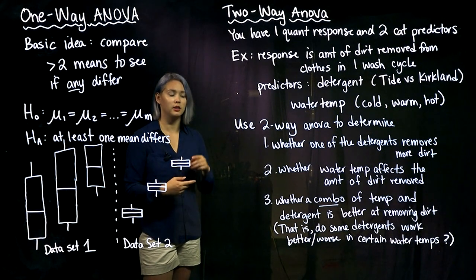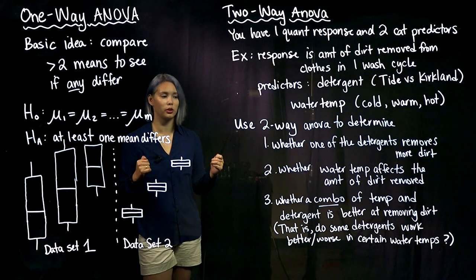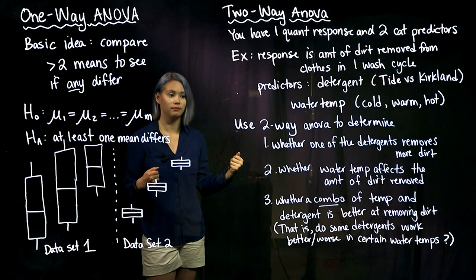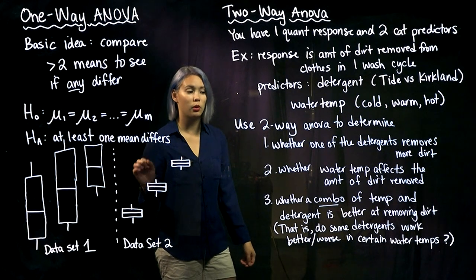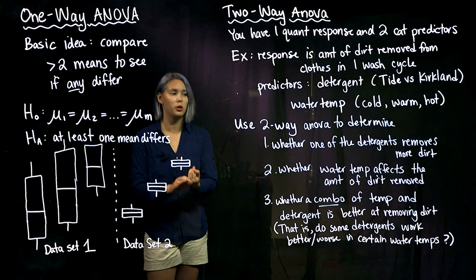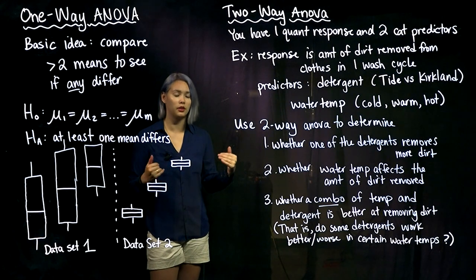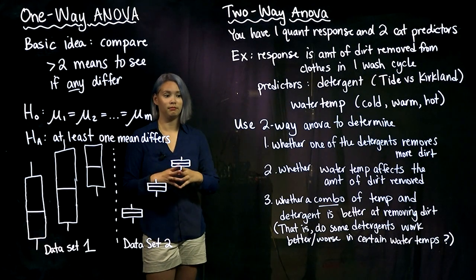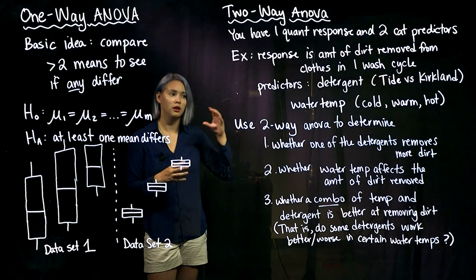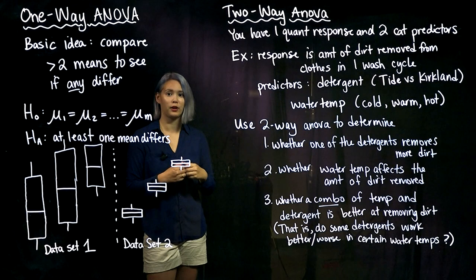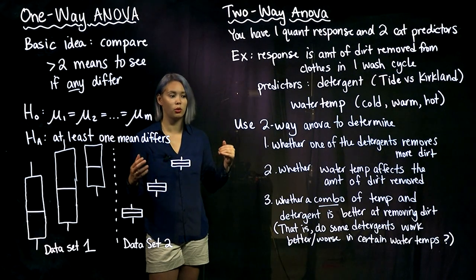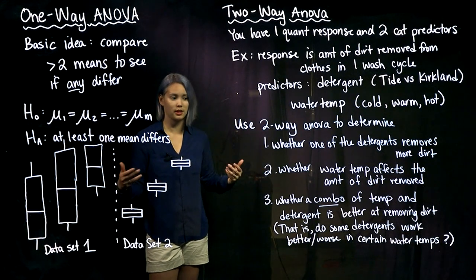We can use two-way ANOVA to figure out a whole bunch of things. One thing we can figure out is whether one of the detergents removes more dirt — in other words, if we look at the mean for Tide versus the mean for Kirkland, do these differ? Next, we can answer whether one of the water temperatures more effectively removes dirt, so our null hypothesis is that the mean for cold water, warm water, and hot water are all equal, and the alternative is that one of those means is not equal. Finally, we can figure out whether some combination of detergent and water temperature is more or less effective at removing dirt — for example, Kirkland might work best in hot water, but for Tide, it doesn't really matter.